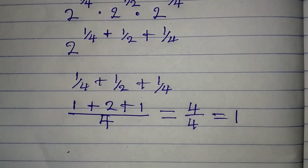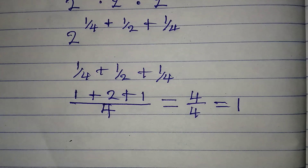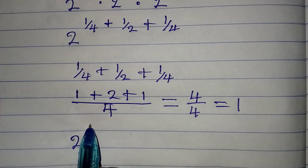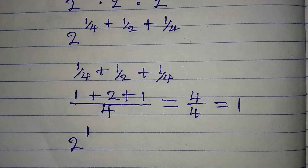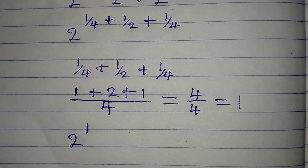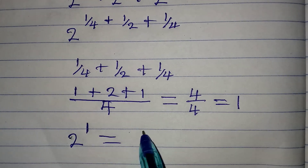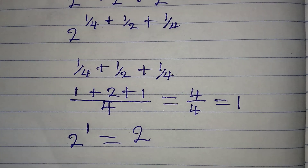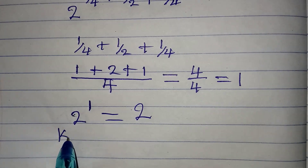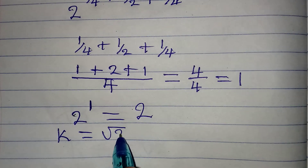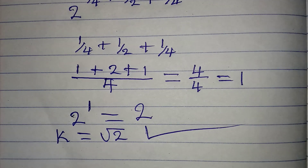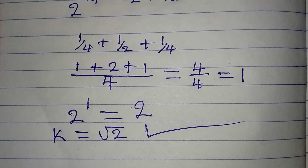Therefore the power is 1, and we have 2 to the power of 1. What is 2 to the power of 1? It equals 2. This confirms that k equal to square root of 2 is correct.